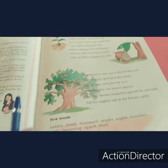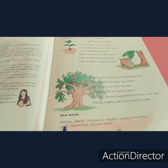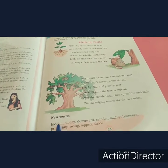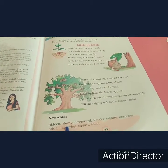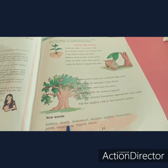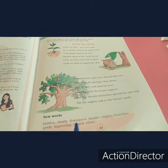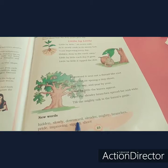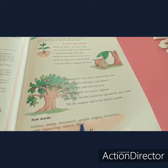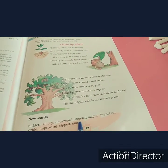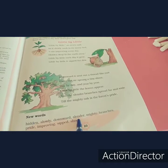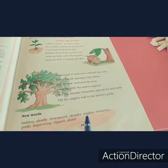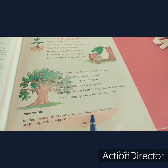Let's start to read the new words. Hidden — H-I-D-D-E-N. Slowly — S-L-O-W-L-Y. Downward — D-O-W-N-W-A-R-D. Slender — S-L-E-N-D-E-R. Mighty — M-I-G-H-T-Y.